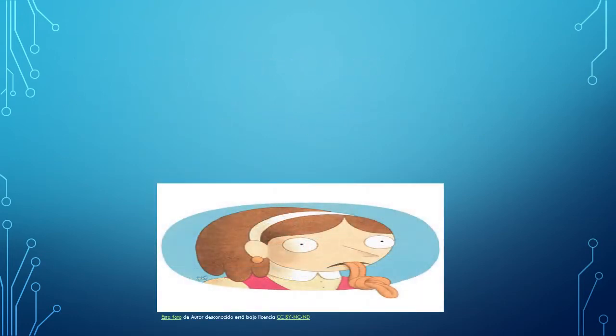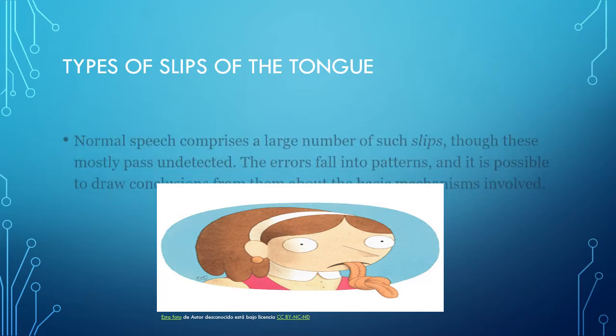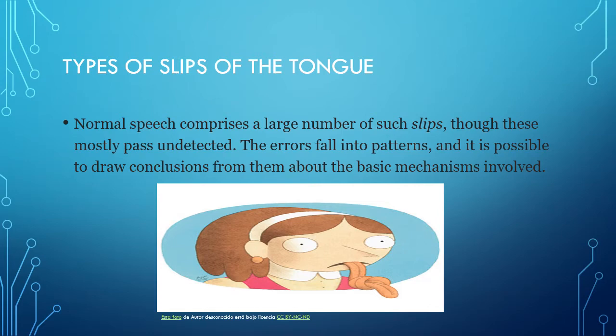According to Jean Ekenson, a professor of language and communications, there are several types of slips of a tongue. Normal speech comprises a large number of such slips, though these mostly pass undetected. The error falls into patterns and it is possible to draw conclusions from them about the basic mechanisms involved.